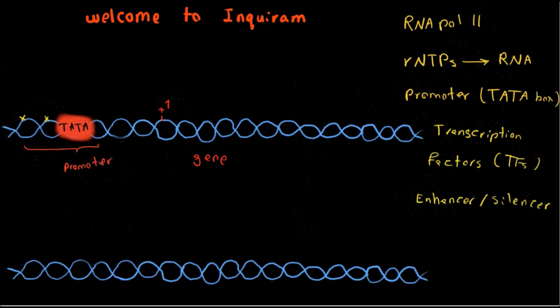Now the transcription in eukaryotes like prokaryotes has three stages. One is initiation, then we have elongation, and lastly we have termination.